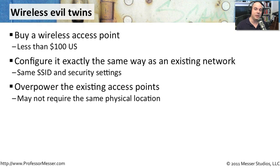You generally make the evil twin the primary access point by ensuring it has the strongest signal for end users to see, and machines will automatically choose that stronger signal — it just makes sense. So you're trying to get much more power out of your evil twin than the existing access point, or you position the evil twin closer to the people you want to gather information from.